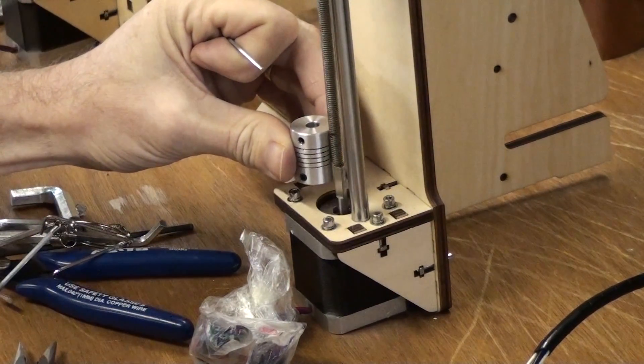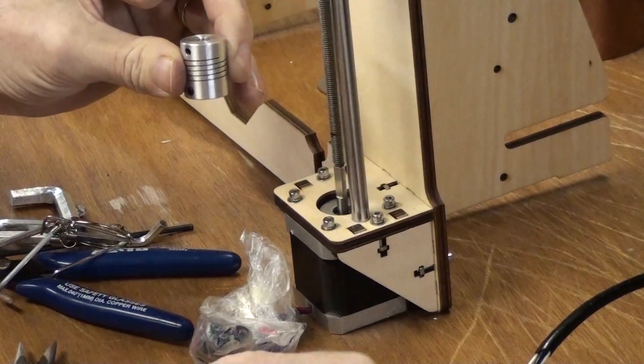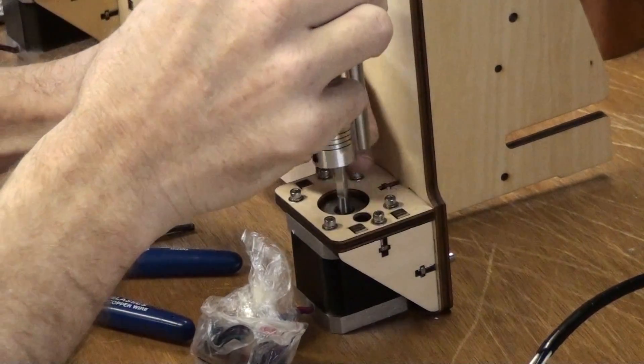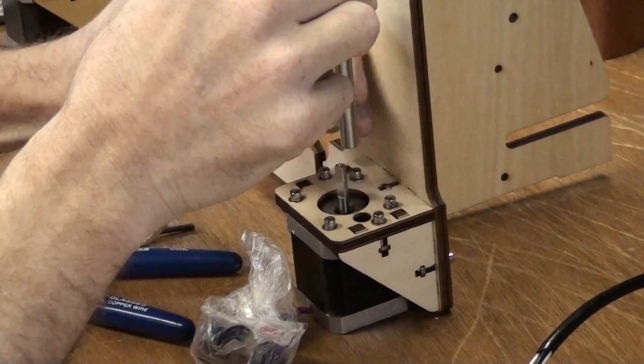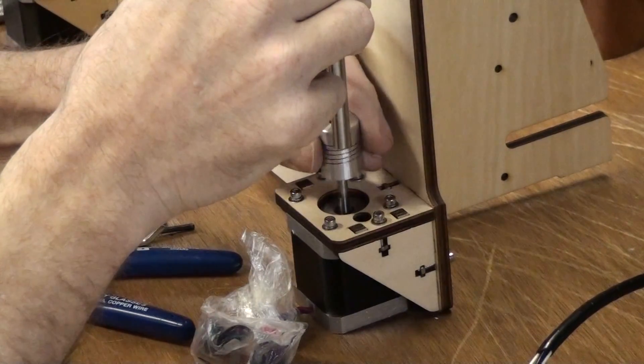In order to line up the coupler as close to center as possible, I put a line on the thread screw. That way, when I put it back together, I can be assured that the gap is precisely in the middle and both threads are making great contact.